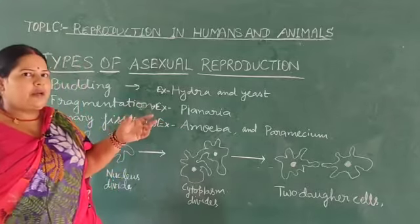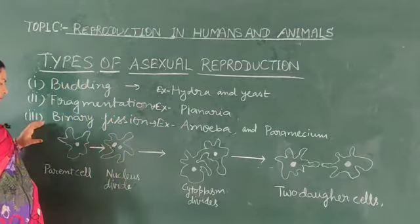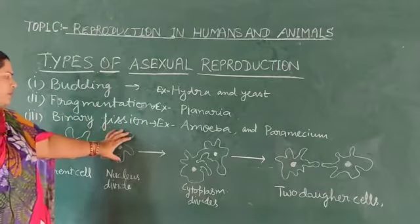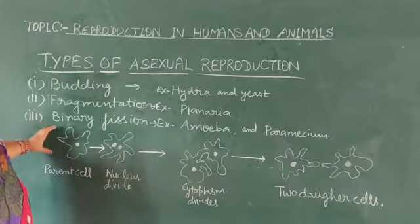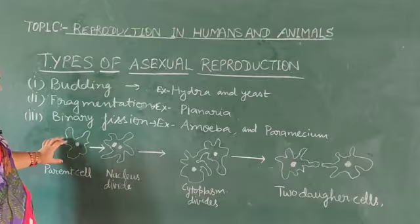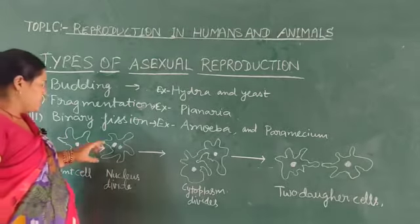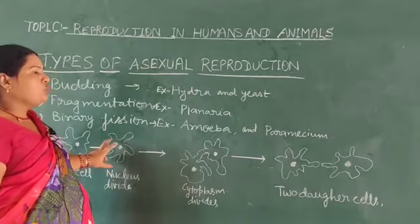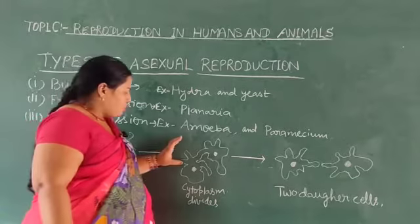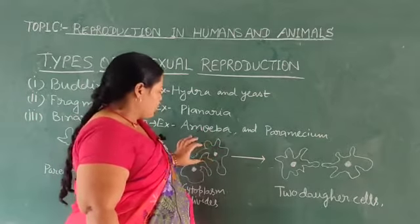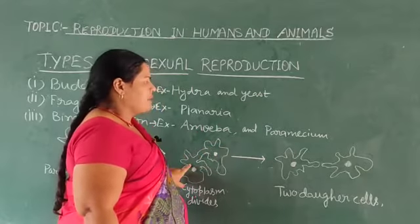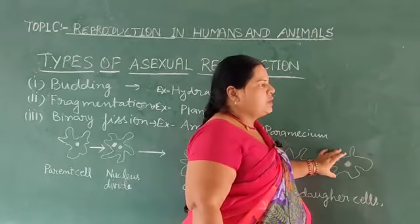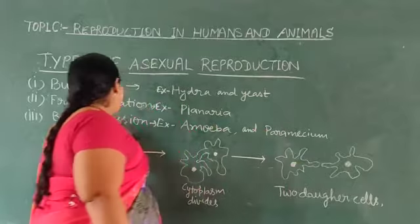Here you can see the structure of Amoeba and how it divides by binary fission. The parent cell has one nucleus. The nucleus then divides into two nuclei, then the cytoplasm divides — one portion of cytoplasm containing one nucleus, and the other portion containing the other nucleus — and two daughter cells are developed. This is the main process of binary fission.